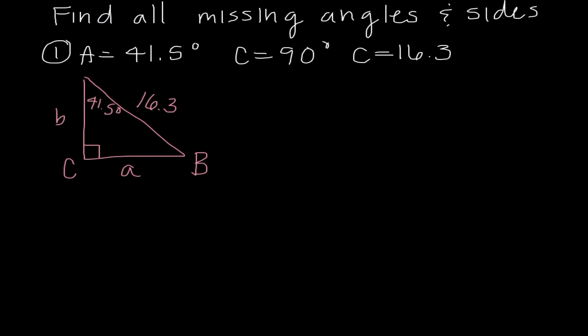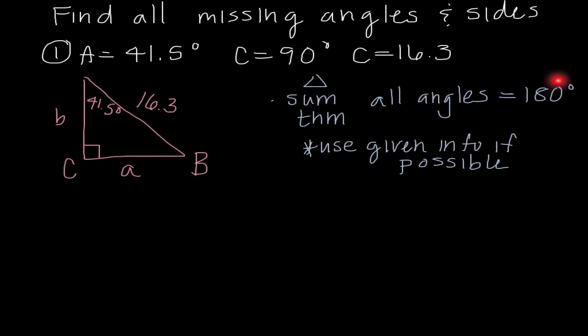Some important side notes. The first is the triangle sum theorem, and you guys learned this in geometry, which means that the sum of all angles is 180 degrees. That makes life really easy because as soon as I know two angles, we can quickly determine what the measure of the third angle would be.